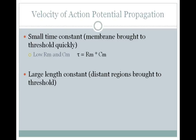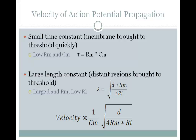For the length constant, you'll want it to be large. This will mean that you're bringing distant regions of the membrane to threshold. To get a large length constant, or lambda, you'll want a large axon diameter, high membrane resistance, and low internal resistance.